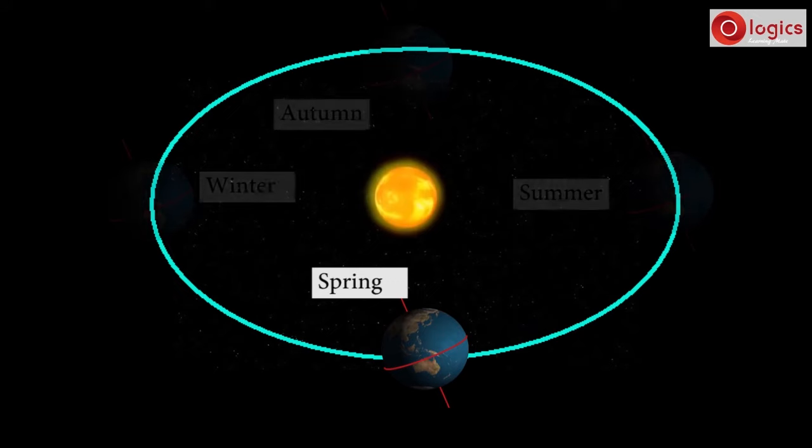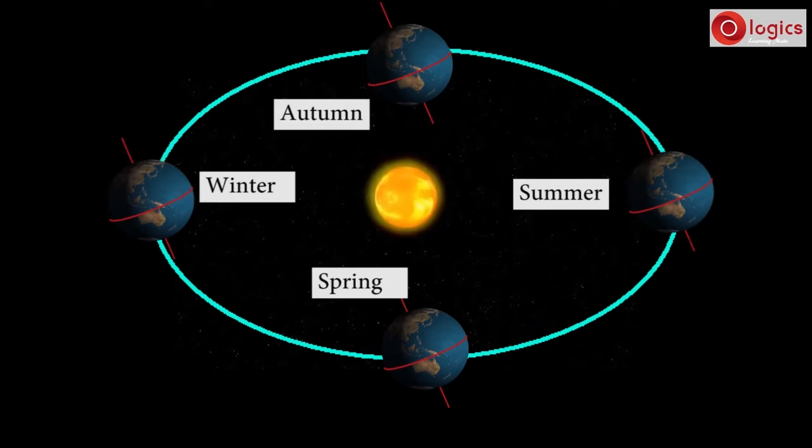In this way, due to tilt in Earth's axis, various seasons are formed while Earth orbiting around sun.